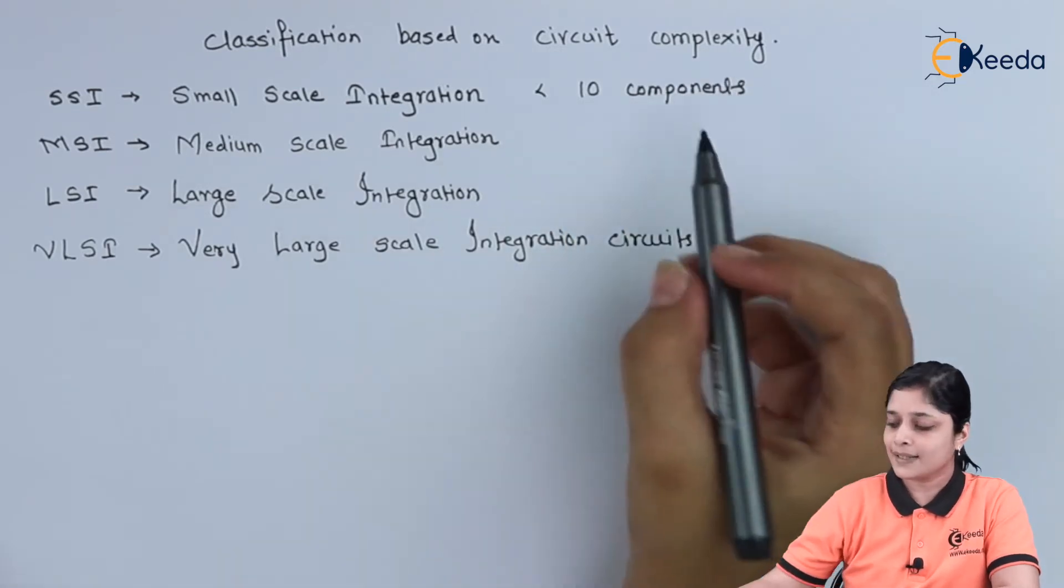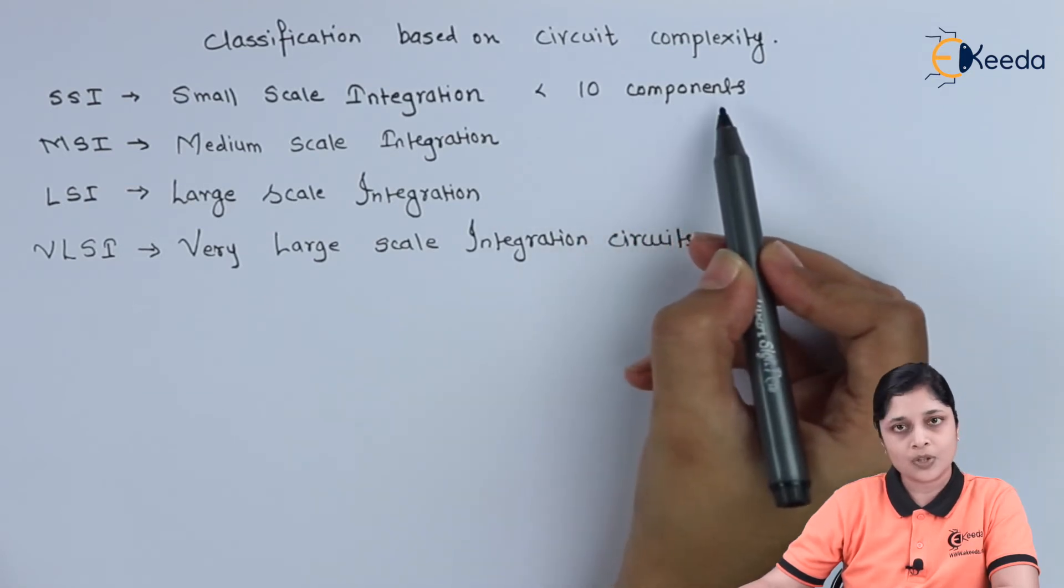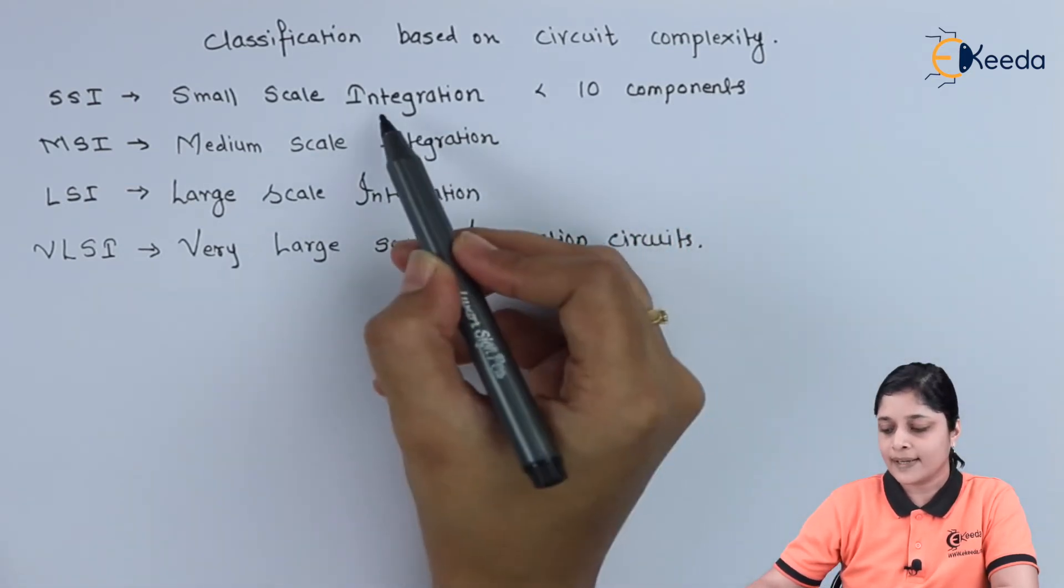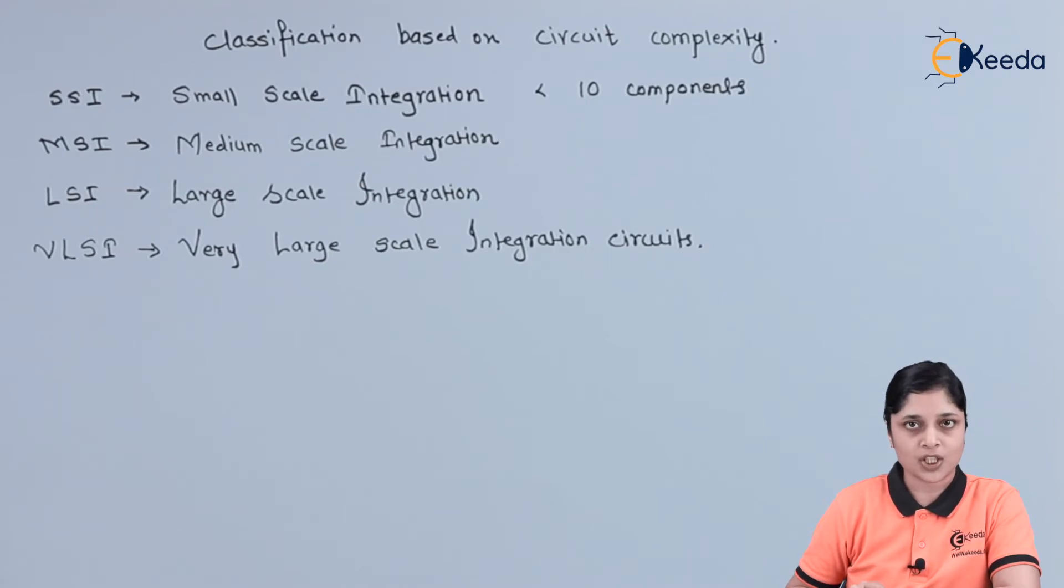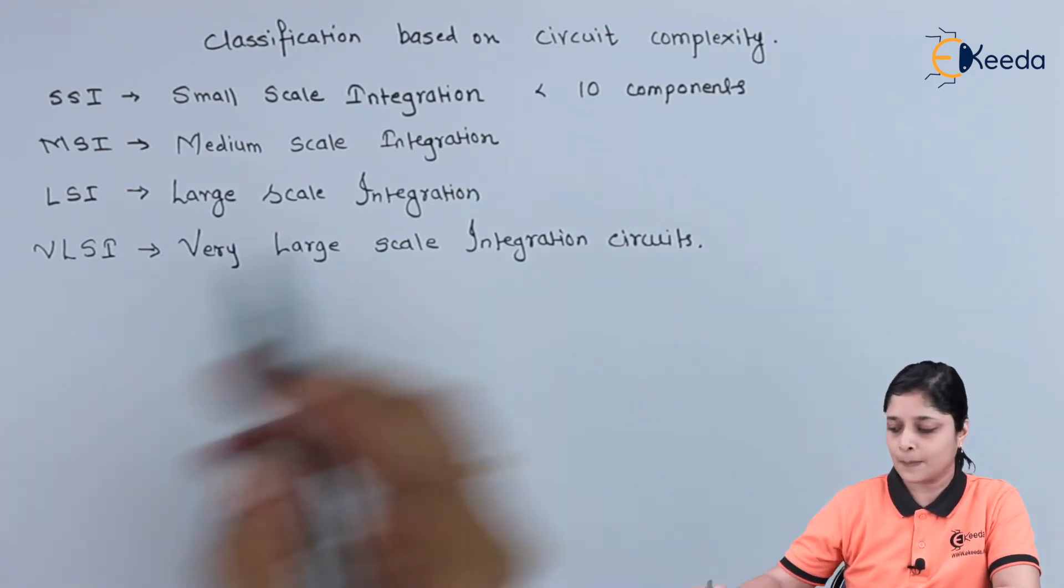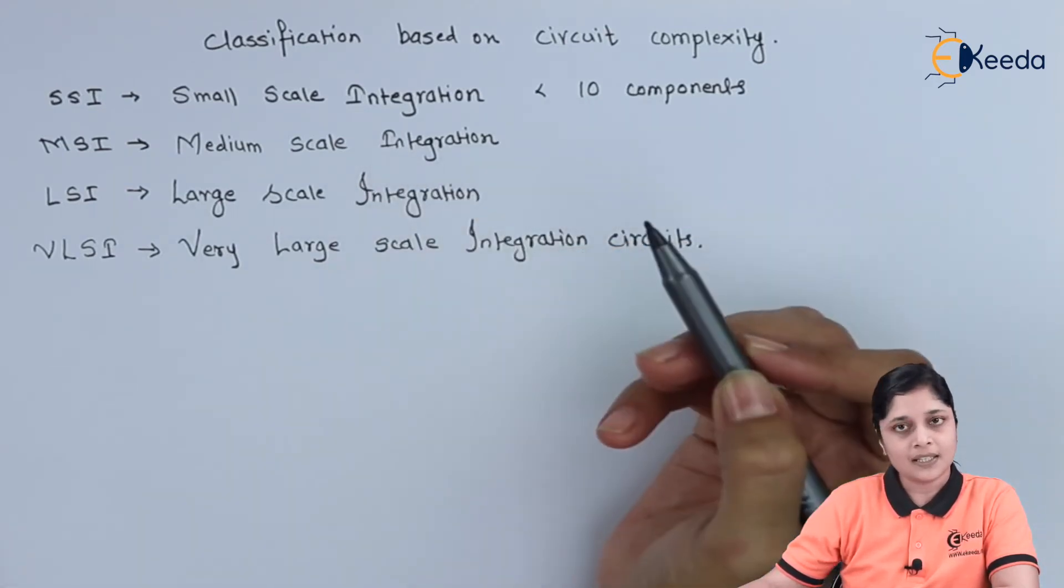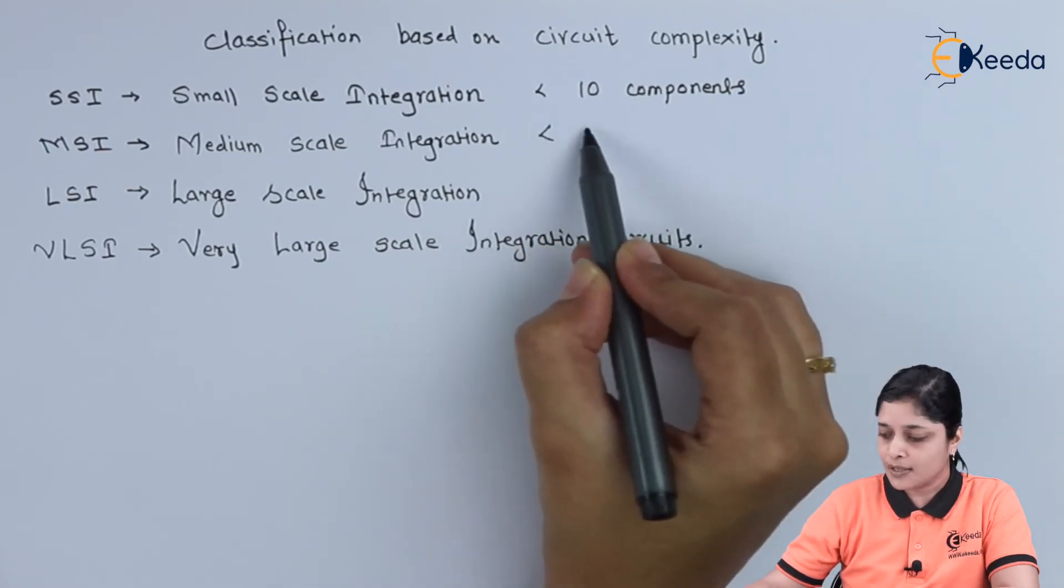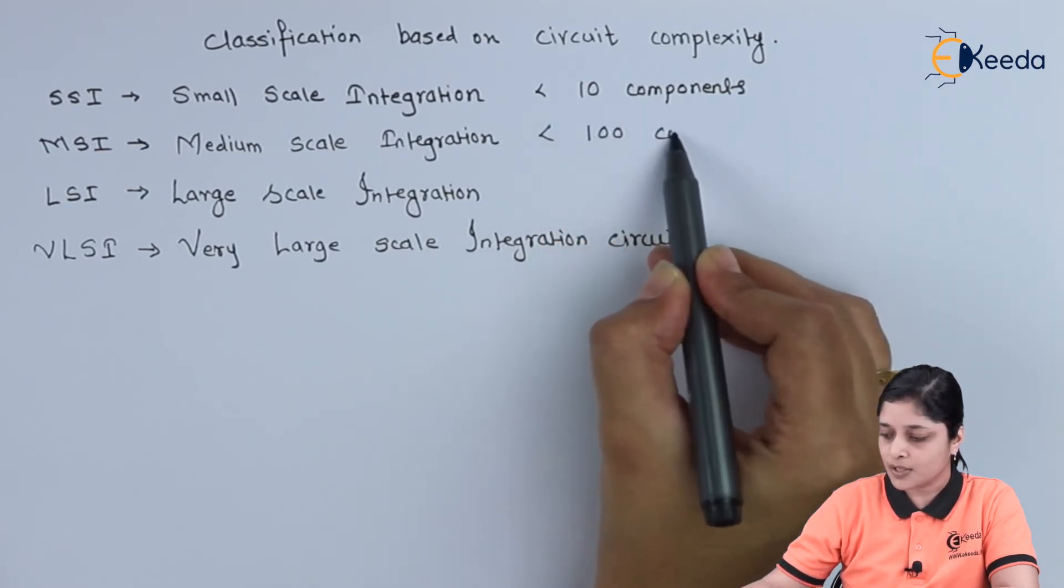Less than 10 components are present while designing the Small Scale Integration technology or circuits. In Medium Scale Integration, we have to use less than 100 components.